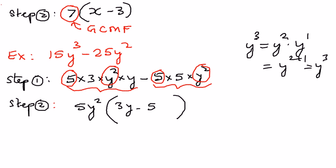5y squared times 3y is 15y to the power of 3. That is what we have. 5y squared times 5 is negative 25y squared. And therefore, we are on the right track.